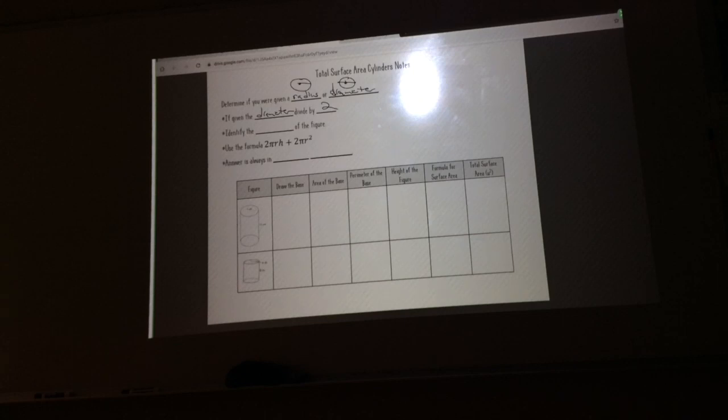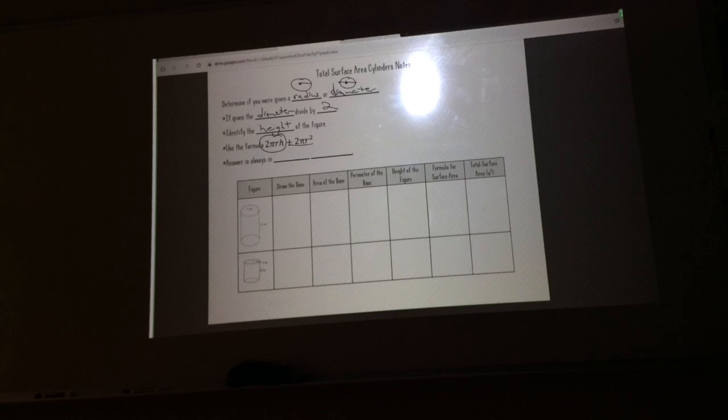Then we're going to identify the height of the figure, which again is the distance between my two bases. Now right here, this is the formula that we used yesterday. Can anybody explain to me the second one, 2πr²? It's the area of the base. Right here, this is our lateral surface area of the cylinder. This is finding the area of the base, and then we're multiplying it by two. Why am I multiplying it by two? Because there's two bases—there's a cylinder on top and a cylinder on the bottom. Our answers are always going to be in units squared.